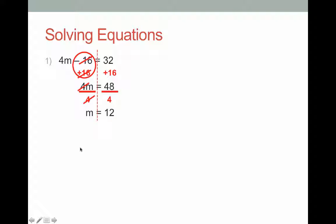I can check that this is correct by substituting m equals 12 into my original equation. 4 lots of 12 is 48, and then when I take away 16, I do indeed get 32, meaning that my solution of m equals 12 is correct.